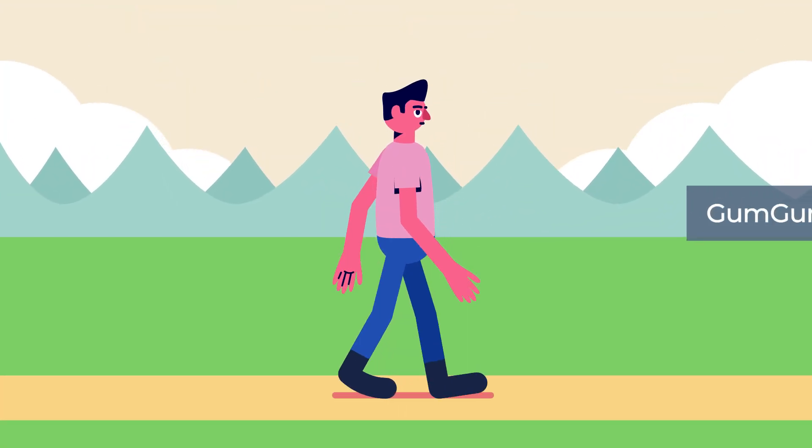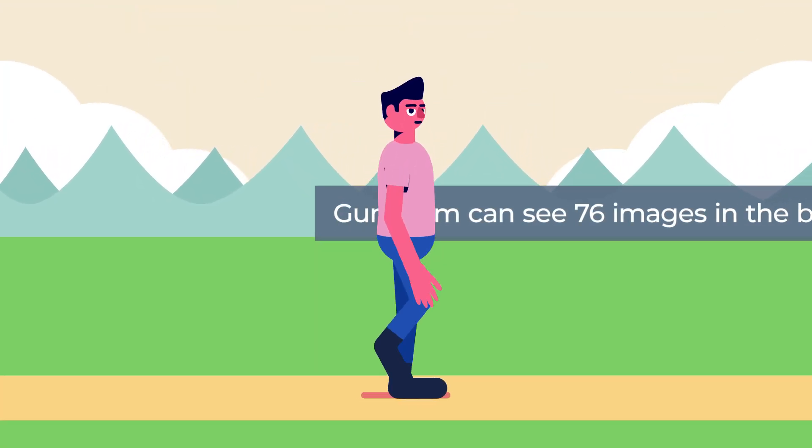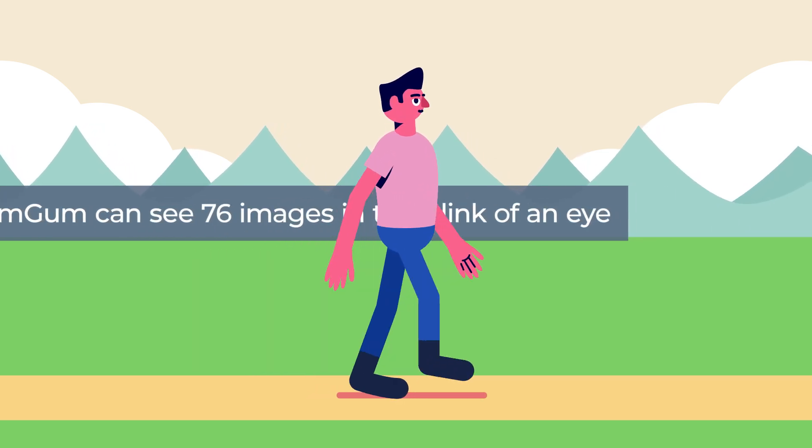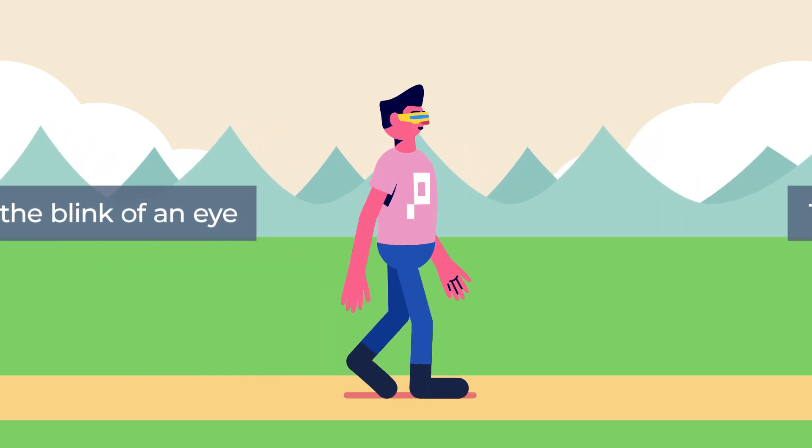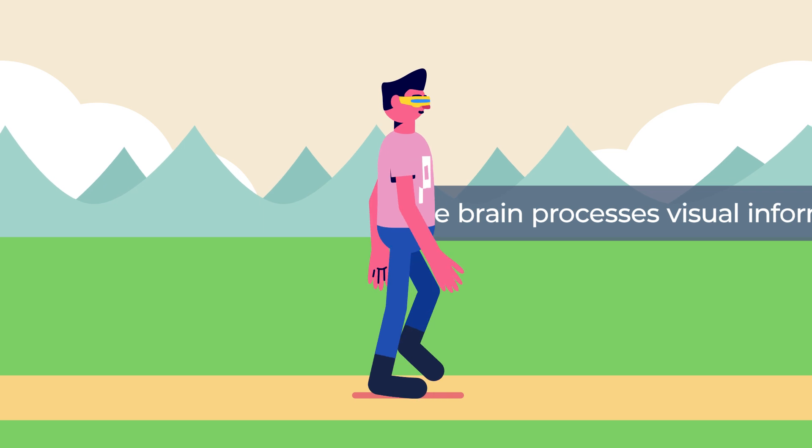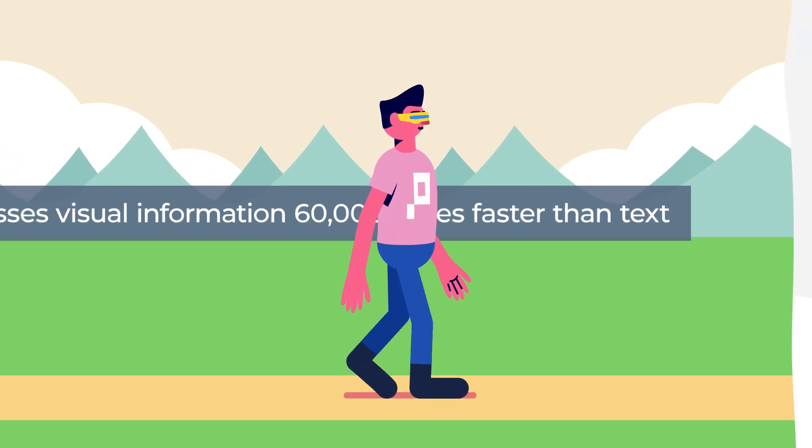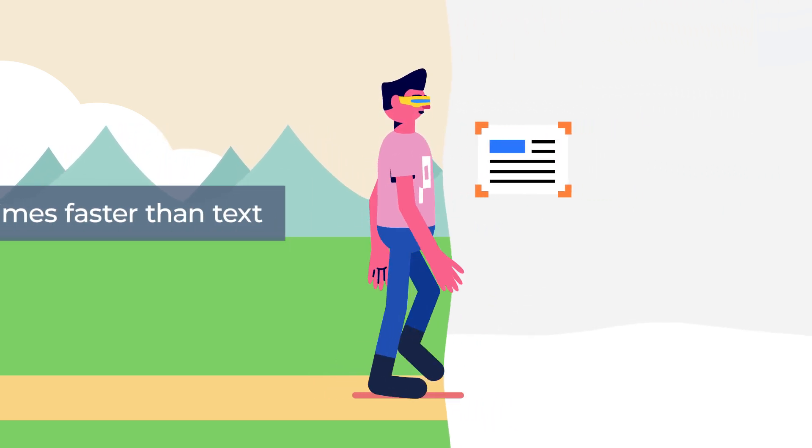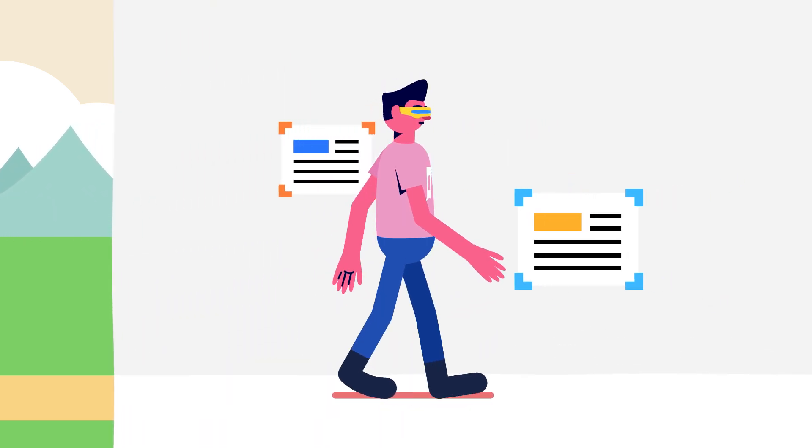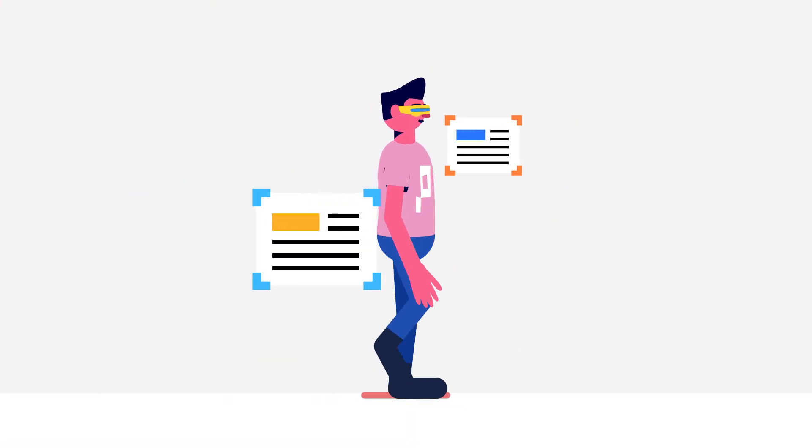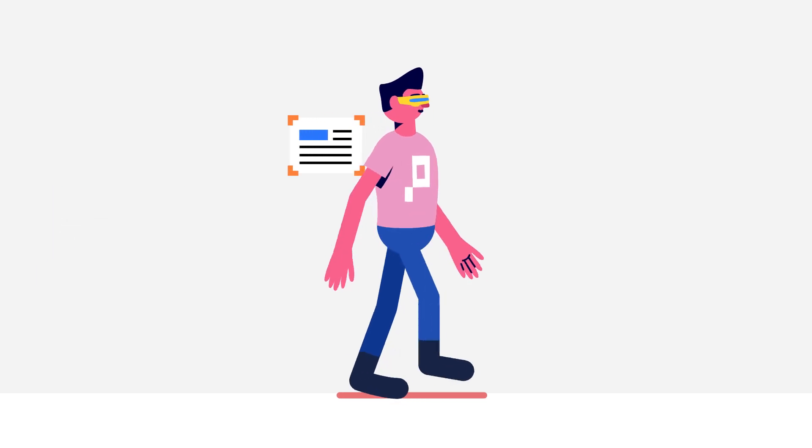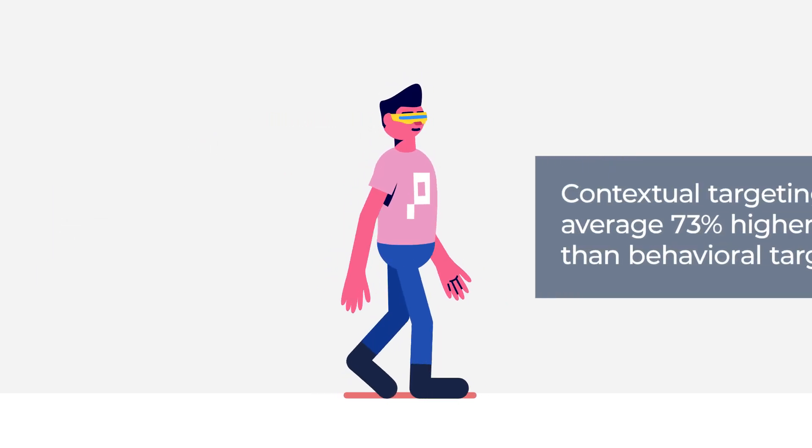The availability of user data is becoming more scarce. So, what's next? With advances in computer vision and natural language processing, it's now possible to decipher the visual content and text of a publisher's page to provide a full semantic analysis and understanding of a user's interest or affinity without the need for personal information such as location, demographic, or behavioral data.